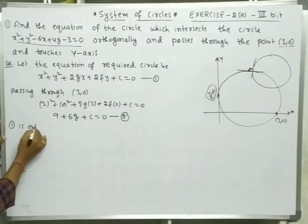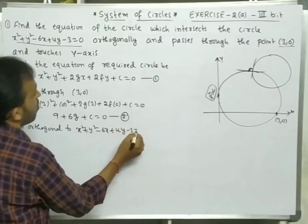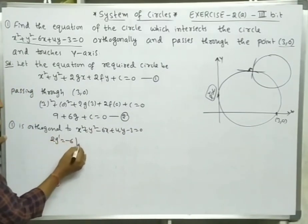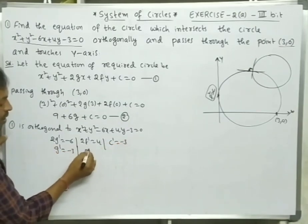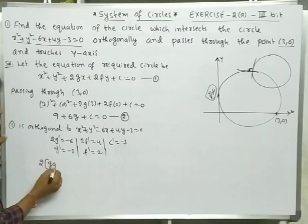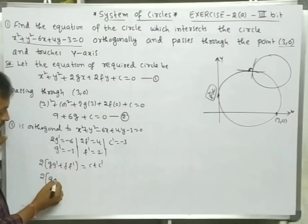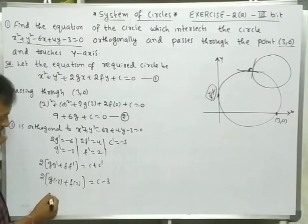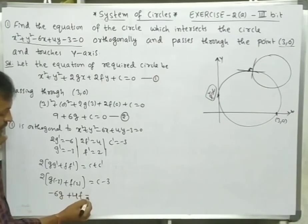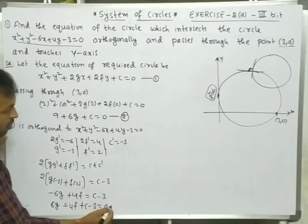This circle is orthogonal to x² + y² − 6x + 4y − 3 = 0. Using the orthogonal condition 2gg' + 2ff' = c + c', we get: 2g(−3) + 2f(2) = c + (−3), which gives −6g + 4f = c − 3. Rearranging: 6g − 4f + c − 3 = 0 — equation number 3.